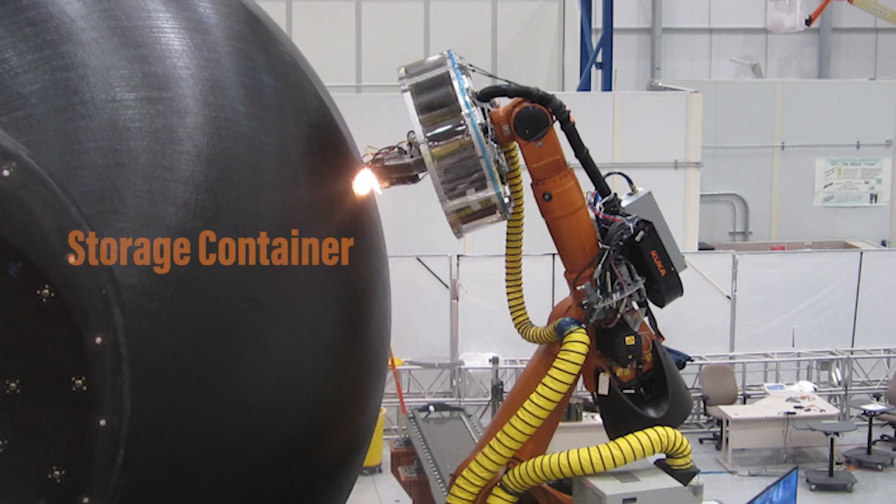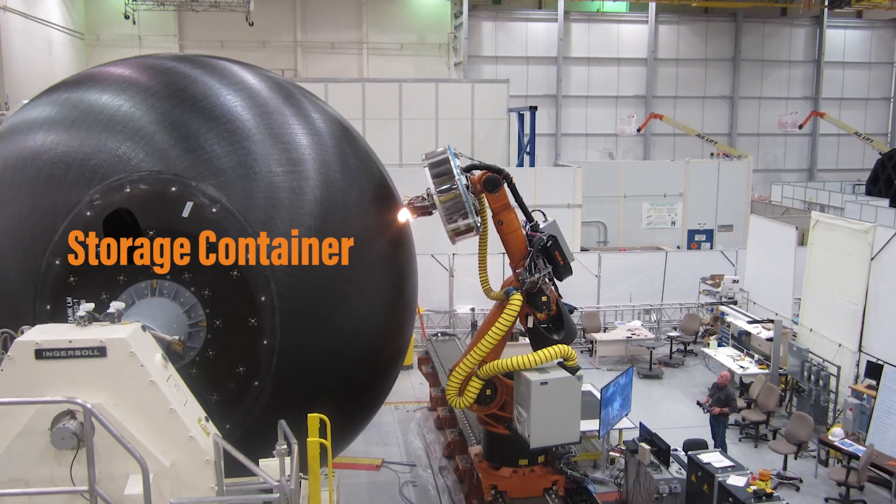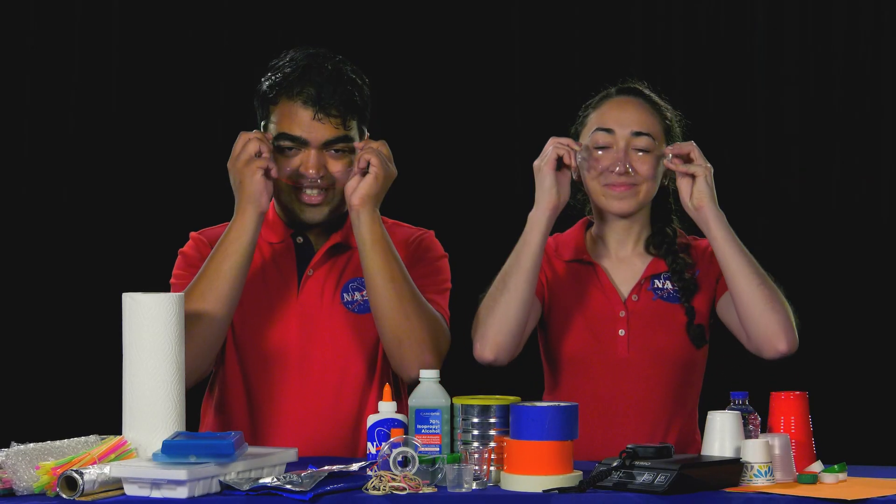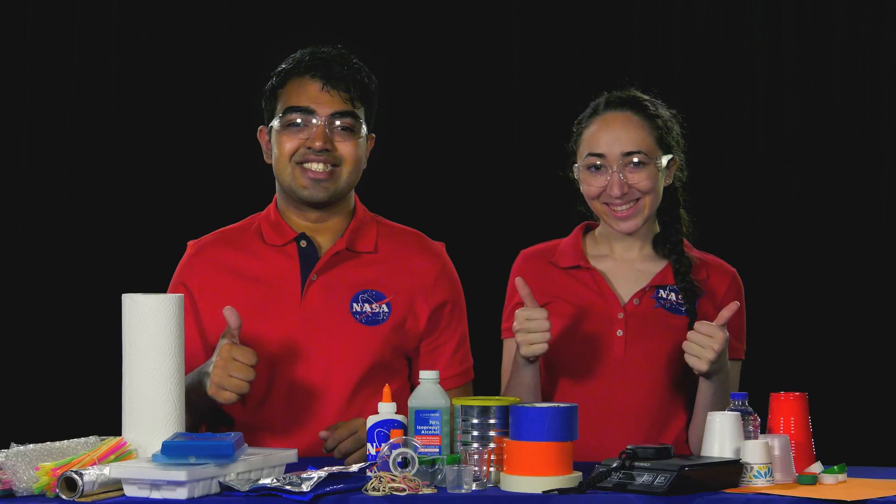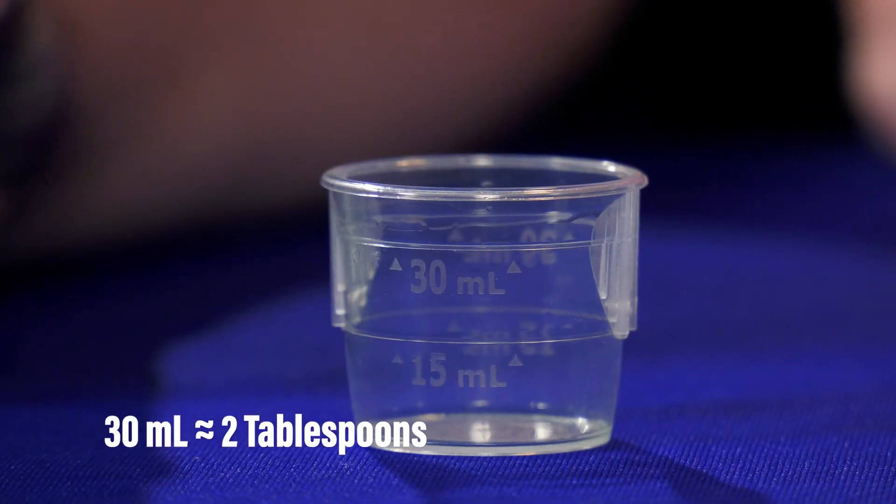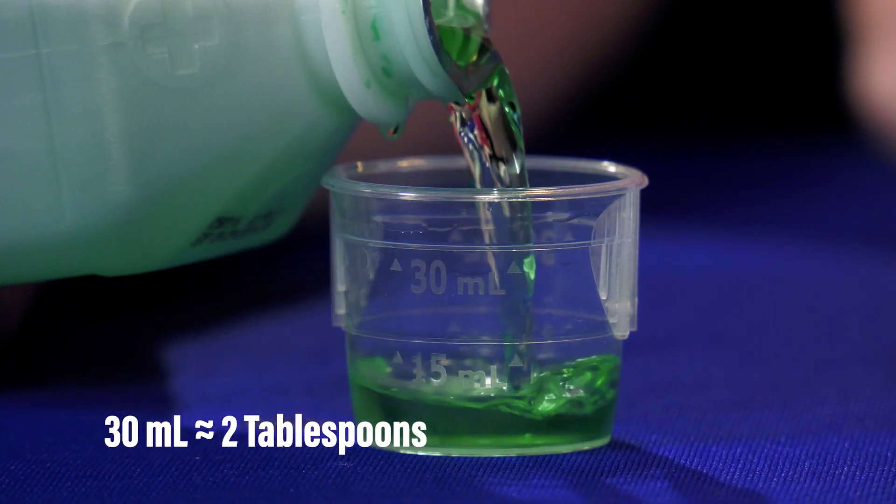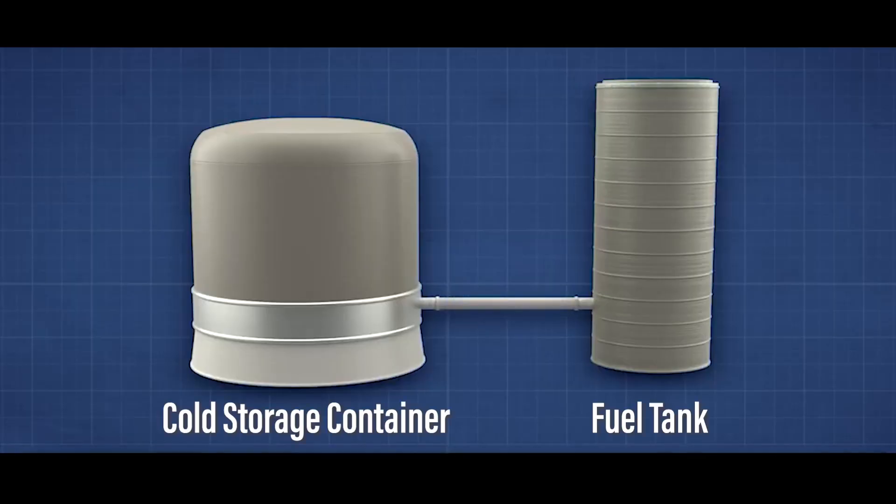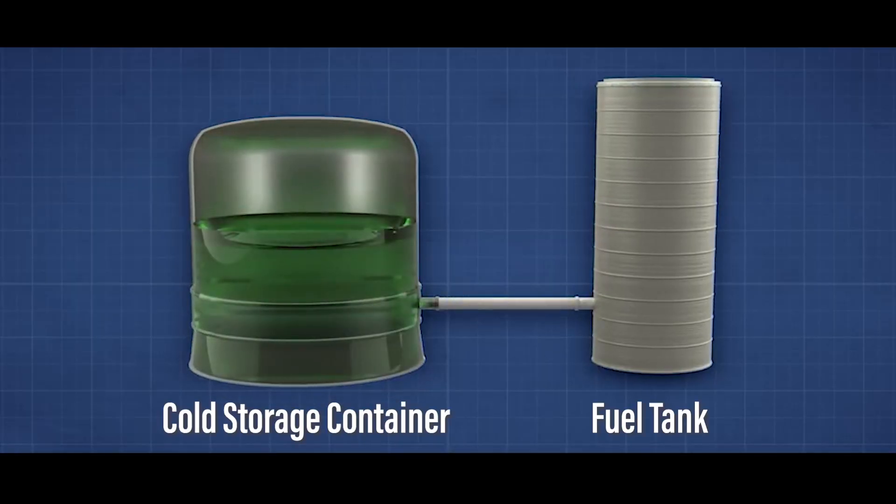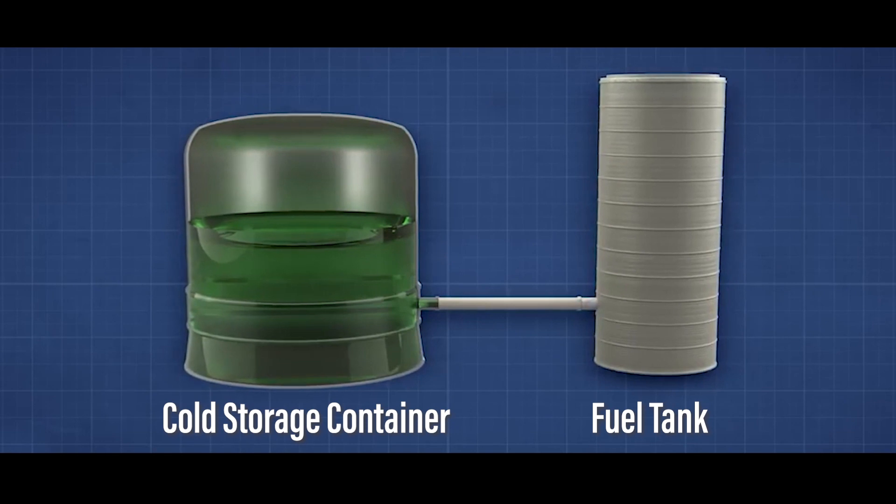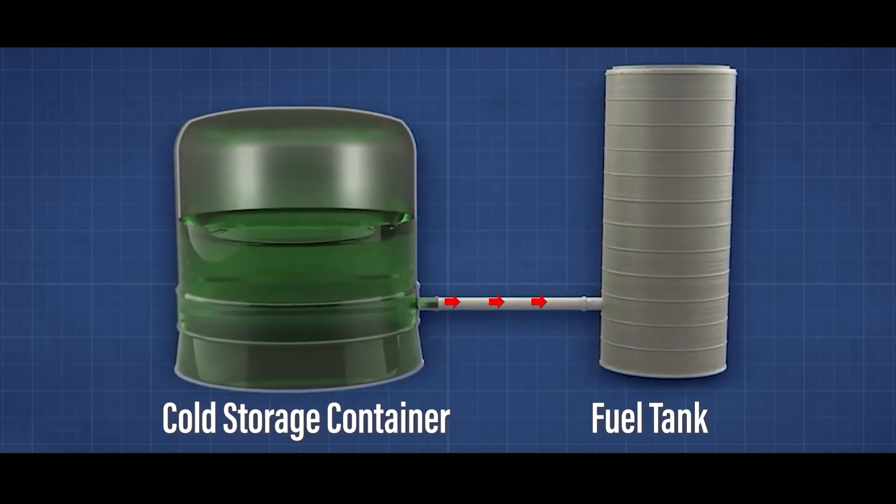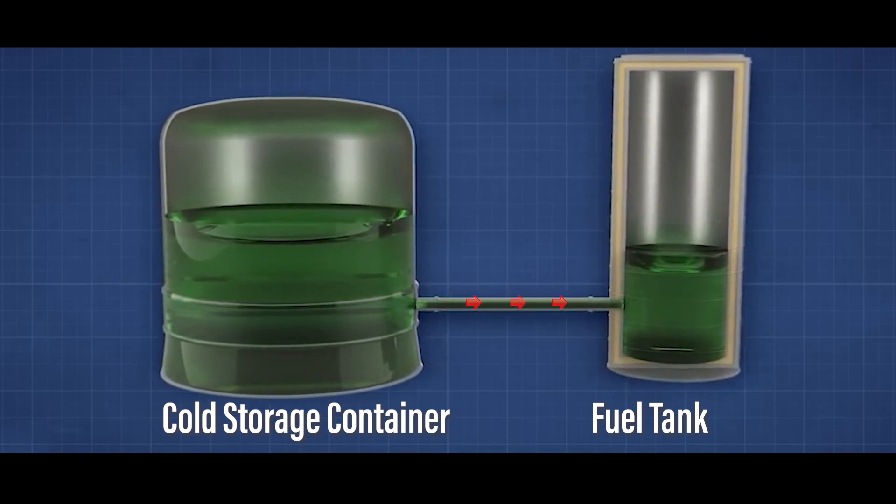You will design and build a prototype of a cold-fluid storage device and transfer system using everyday items you can find in your classroom or home. Your storage container must hold a minimum of 30 milliliters of rubbing alcohol for at least 24 hours without losing any liquid to evaporation or leakage. Then transfer the liquid from the cold storage container to the fuel tank of the spacecraft.